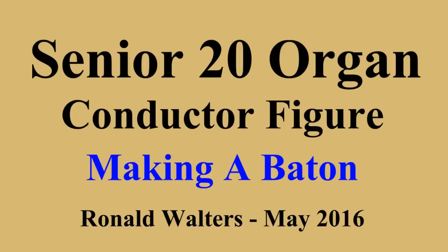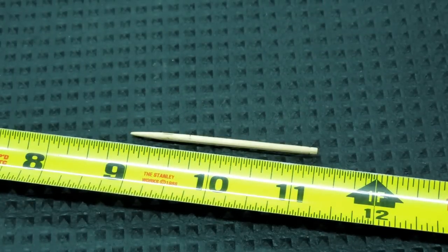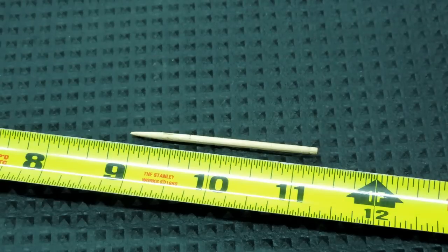I'm going to show you how I make a baton for the conductor. These are fancy toothpicks. They're pointed on one end and they've got a little machining and rounding over on this side.